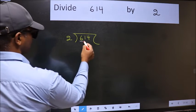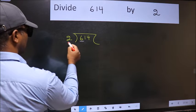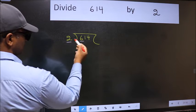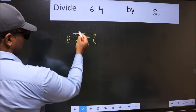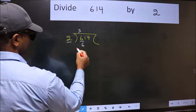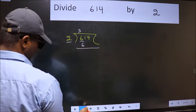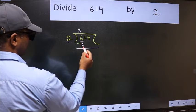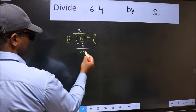Here we have 6 and here 2. When do we get 6 in the 2 table? 2 times 3 is 6. Now we should subtract. We get 0.